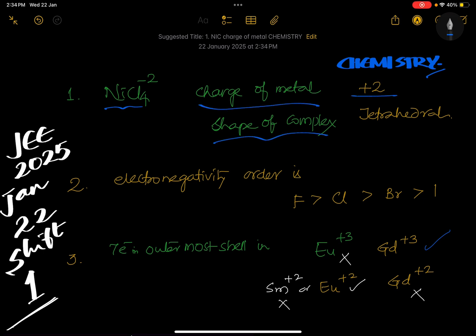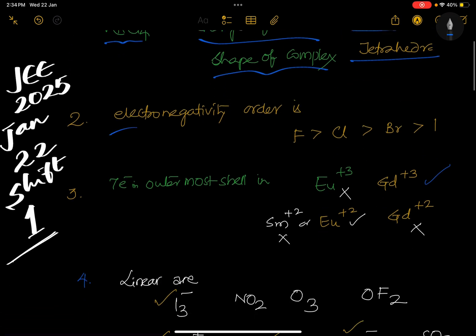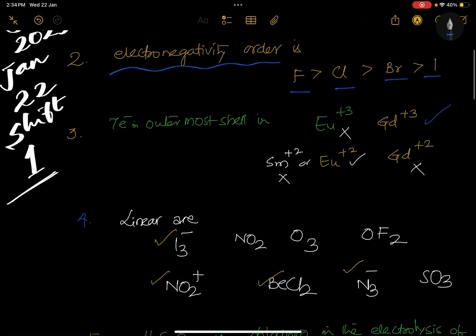Charge is plus two, shape is tetrahedral, very basic line of NCERT. Electronegativity order: fluorine, chlorine, bromine, iodine - periodic table, very basic level question. Seven electrons in outermost shell lanthanides, they are asking Eu+3, Gd+3, Eu+2, Gd+2.